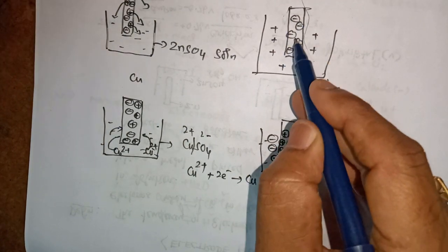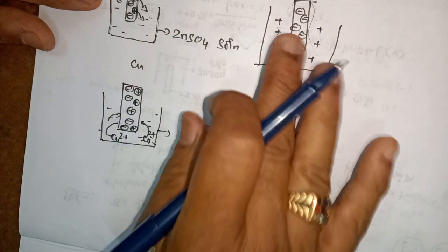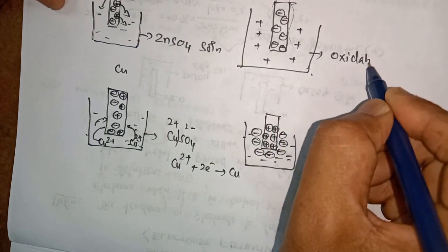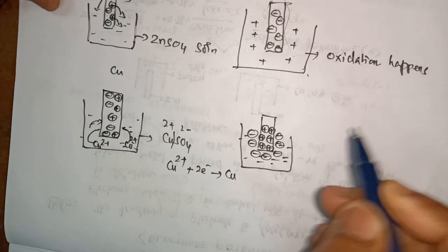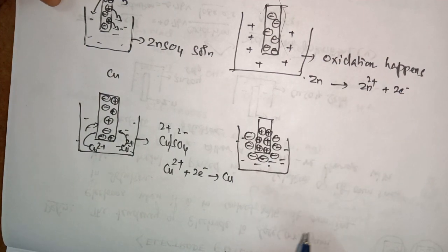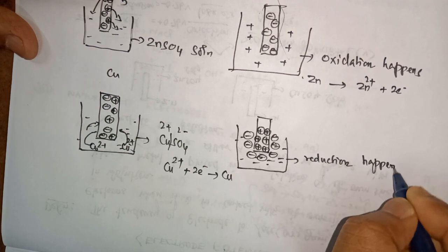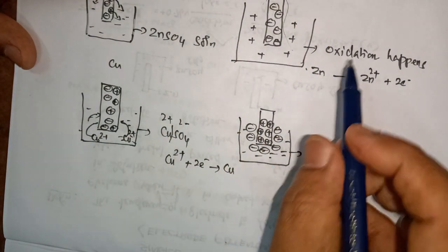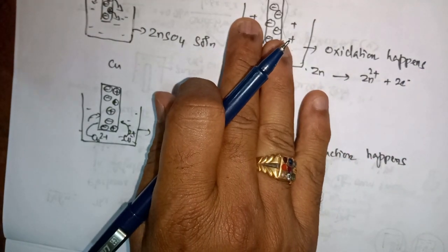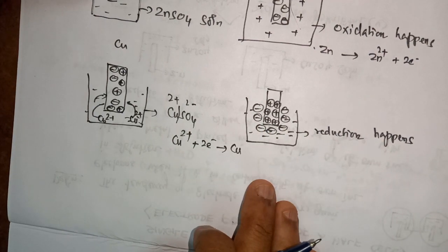So for the zinc case, there is a negative sign on the metal and positive charges around it in solution. For the copper case, there is a positive layer on the metal and a negative layer around it — from sulfate ions. These are the two cases. For zinc, oxidation happens — zinc is losing 2 electrons and becoming Zn²⁺ ion. For copper, reduction is happening — Cu²⁺ gains electrons and becomes copper.